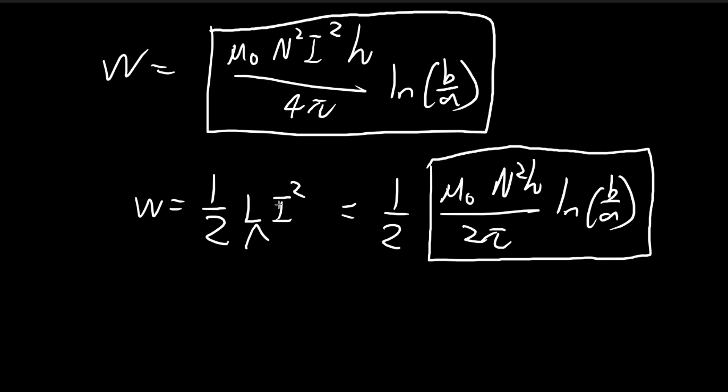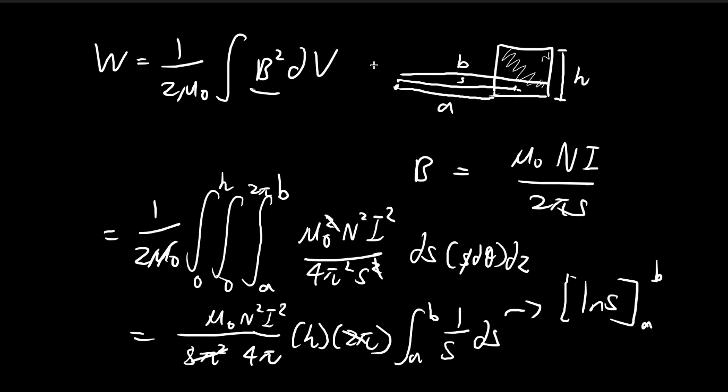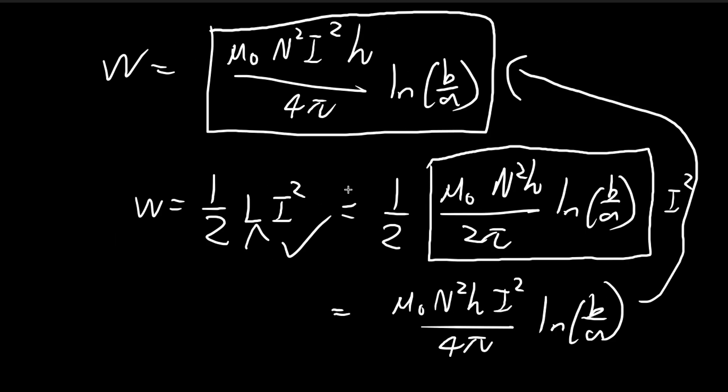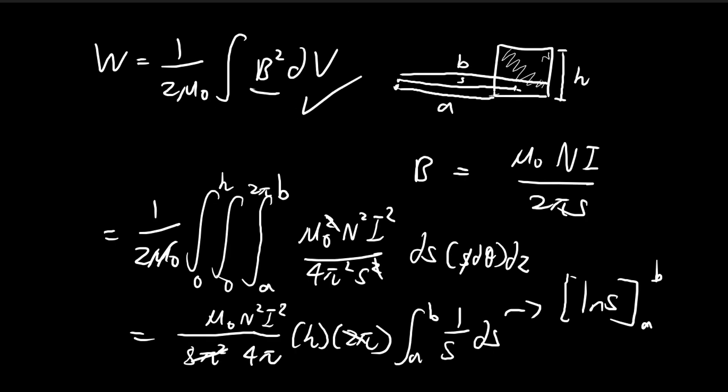I'm going to substitute the self-inductance and then multiply it by I². Once you combine everything, the denominator becomes 4π. It's completely identical to the answer we obtained through integration. This checks that this formula and this formula are both consistent.